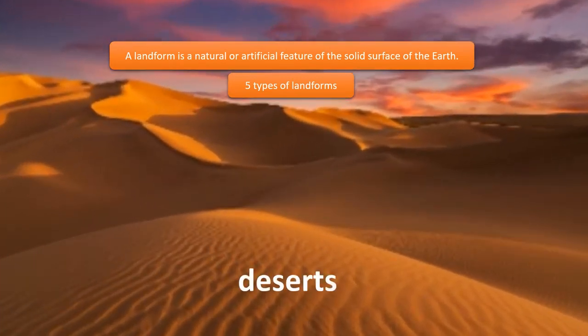A desert is a barren area of landscape where little precipitation occurs and consequently living conditions are hostile for plant and animal life.